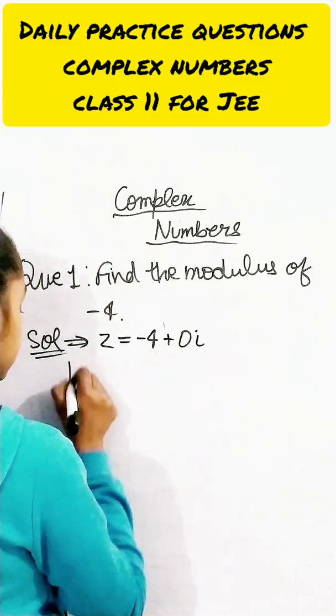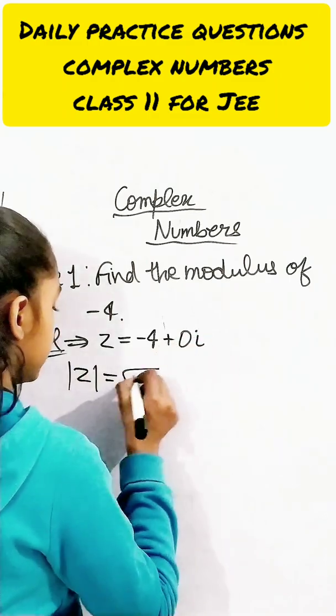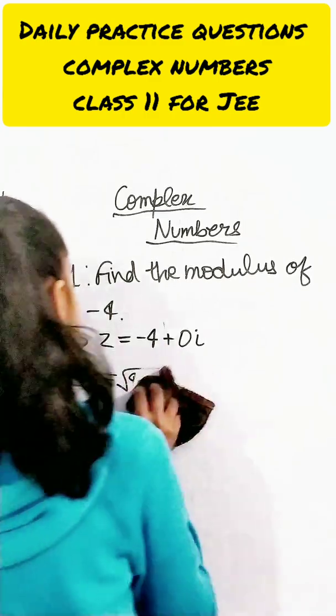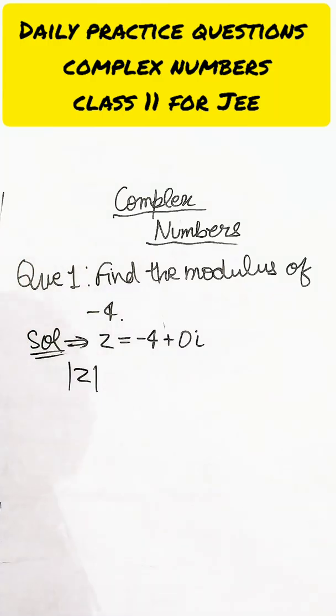So now the modulus of z is going to be 4 - wait a second, it's negative, don't forget this. Let's write it again, okay?